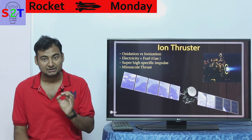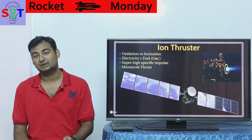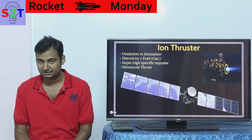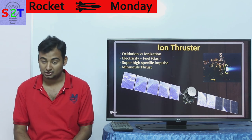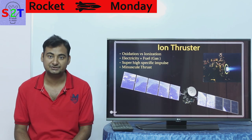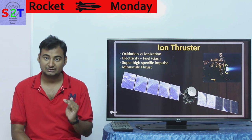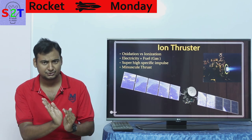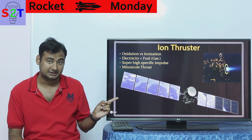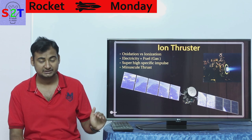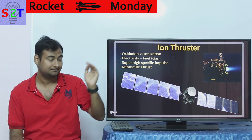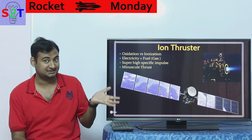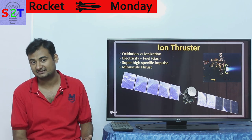We measure specific impulse in seconds. Generally below 500 seconds is what you can expect from a combustion engine — even combining liquid hydrogen and liquid oxygen, that's the best you can do. No practical engine even reaches that point. So 500 seconds of specific impulse is considered awesome for chemical engines. However, ion engines start from 1500 seconds and go up to 10,000 seconds. If mileage is the criteria, these are the granddaddy of it.